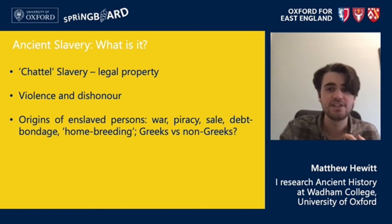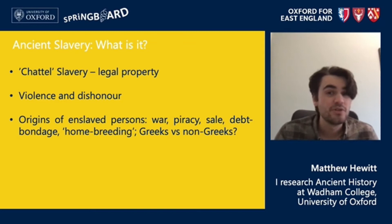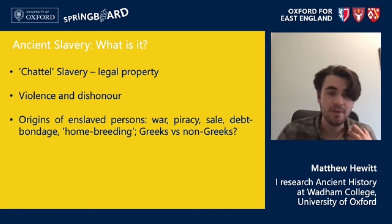In terms of where slaves came from in the ancient world, probably the most common form is war or piracy — captured individuals could then be sold. Some individuals fell into slavery through debt bondage, while others were born into slavery.